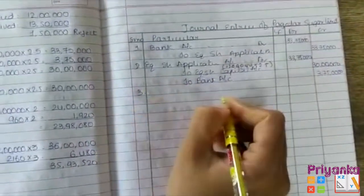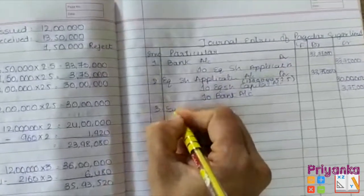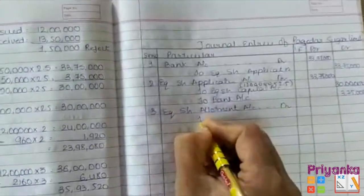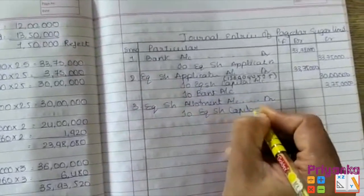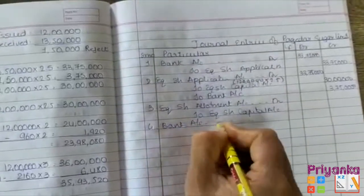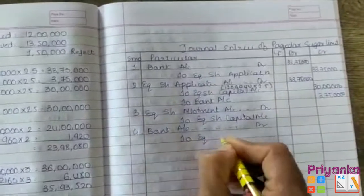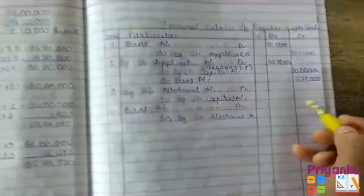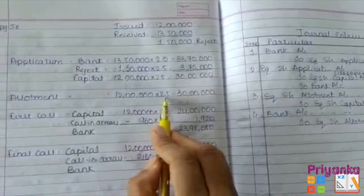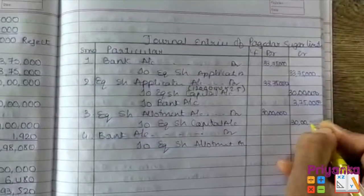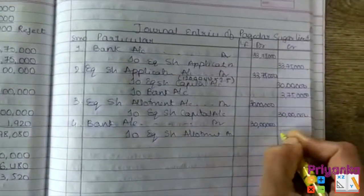For application in Question 7: bank account debited to equity share application account — 13,50,000 × ₹2.5 = ₹33,75,000. Next: equity share application account debited to equity share capital account — 12,00,000 × ₹2.5 = ₹30,00,000 to capital. Excess 1,50,000 × ₹2.5 = ₹3,75,000 refunded via bank account credit. For allotment — no call-in-arrears at this stage — equity share allotment account debited to equity share capital account, 12,00,000 × ₹2.5 = ₹30,00,000.